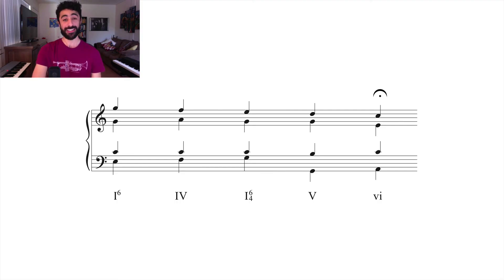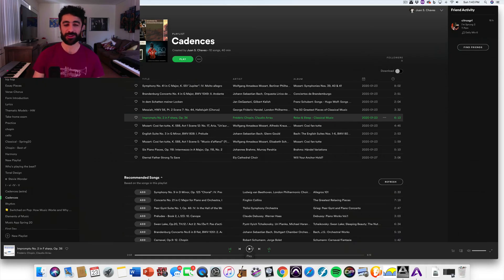The last type of cadence and the one that has the least amount of closure happens when the tonic chord at the end gets replaced by a submediant, by the sixth chord. This shatters our expectations of closure so much that we say that it deceives us. We call it a deceptive cadence. In Spanish, for example, we call it a broken cadence because it breaks it—it doesn't let it finish. Let me play an example. This is Impromptu Number 2 in F-sharp, Op. 36 by Chopin.